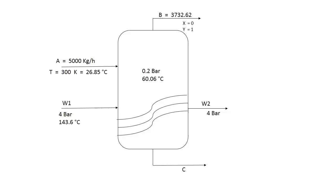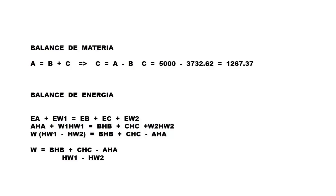The first step is to perform a mass balance on the evaporator. As seen in the diagram, A enters and two streams exit: B and C. Since we know A and B, we calculate C: C = A − B. Substituting: C = 5000 − 3732.6209 = 1267.3791 kg/h.